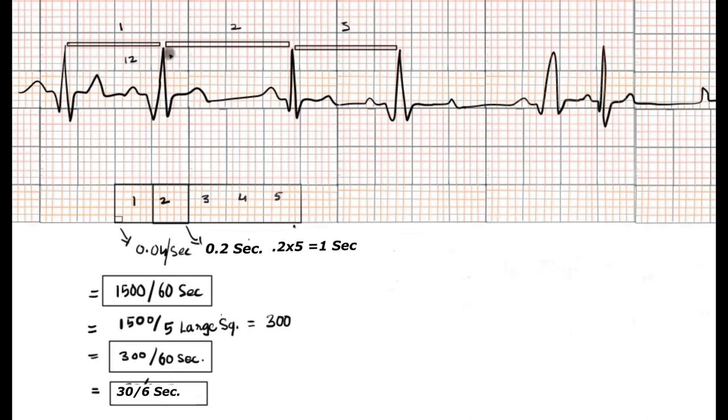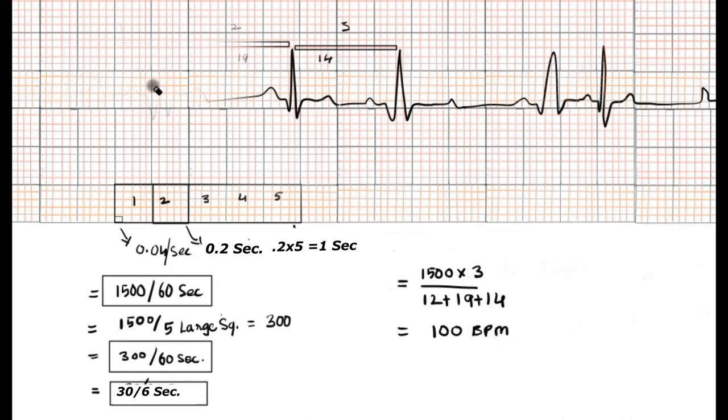Count the small boxes: 12 here, 19 in the second rhythm, and 14 in the third beat. Using 1500×3 subsequent beats divided by the cumulative sum of the 3 beats' small squares, we get 100 beats per minute heart rate in the irregular case.